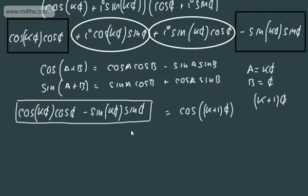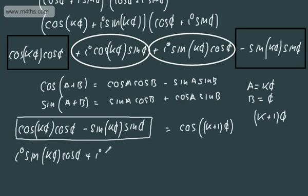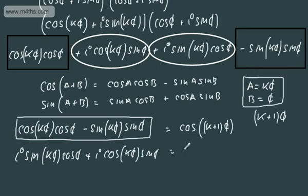Now let's consider the remaining part. We've got i sin kθ cos θ plus i cos kθ sin θ. Rewriting, that's i(sin kθ cos θ plus cos kθ sin θ). Again with a equals kθ and b equals θ, this fits sin(a + b) equals sin a cos b plus cos a sin b, so this equals i sin((k+1)θ).